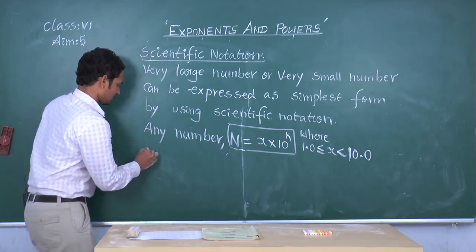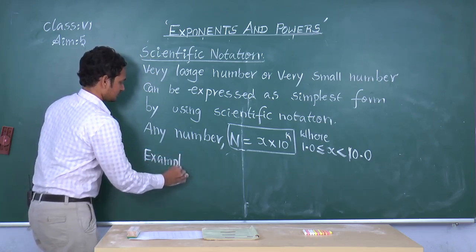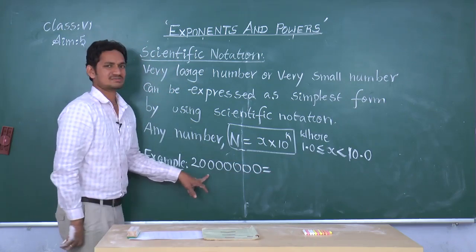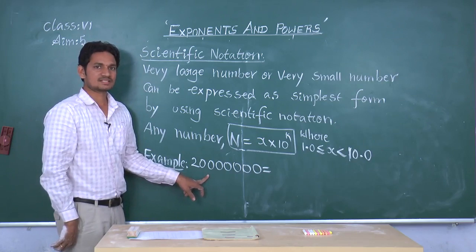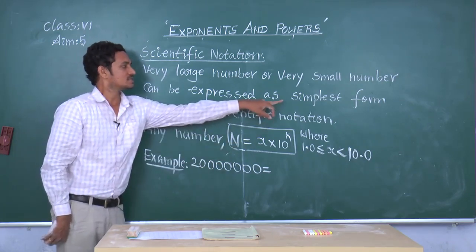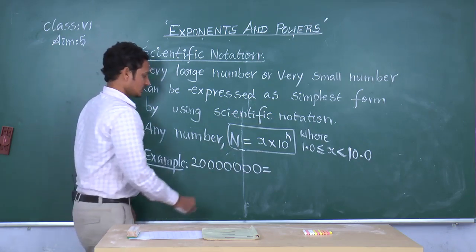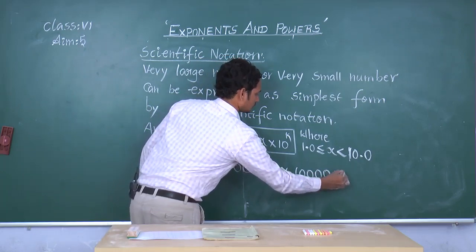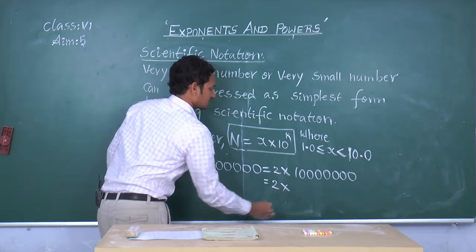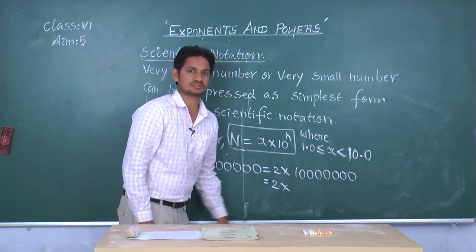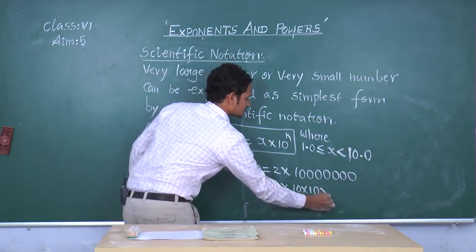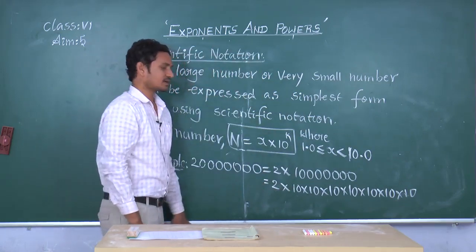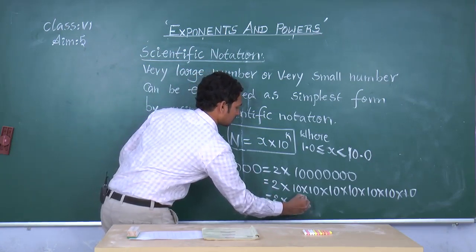Here, I am taking one example. It is very difficult to read this number. In such cases, this very large number can be converted into simplest form by using scientific notation. We can write this number as 2 into 10 power 7, since there are 7 zeros.